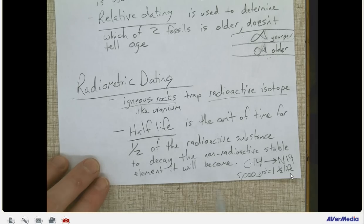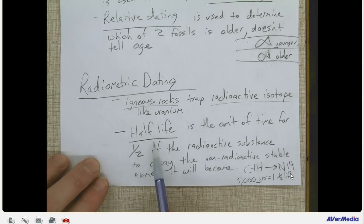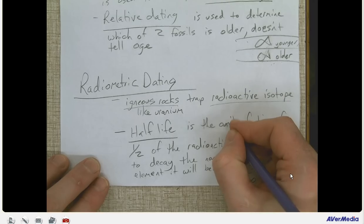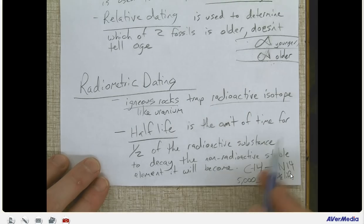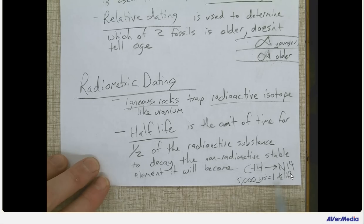Radiometric dating is used on igneous rocks, which trap radioactive isotopes like uranium. Half-life is the amount of time for half of a radioactive substance to decay into a non-radioactive stable element. For example, carbon-14 is the radioactive version of carbon, and it will decay into nitrogen — half the material decays in 5,000 years, so 5,000 years is one half-life for carbon-14.